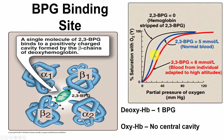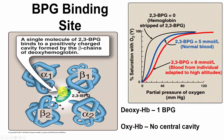BPG causes a shift of the oxygen binding curve to the right, just like CO2 and protons. With BPG at zero it's almost hyperbolic, but with normal BPG and then elevated BPG at high altitudes, you can see it shifts to the right. BPG lowers the affinity for oxygen so hemoglobin doesn't get quite as well saturated, but delivers a higher percentage of its oxygen. With oxyhemoglobin there's no central cavity, so BPG cannot bind — it can only bind in the deoxy form.